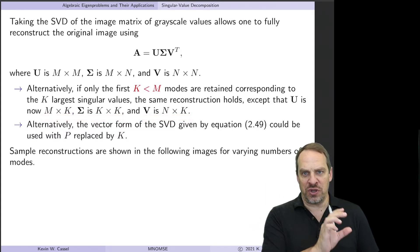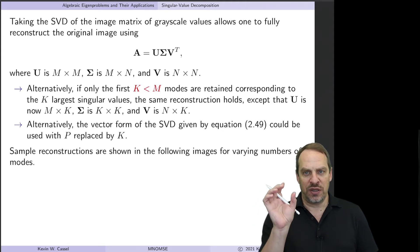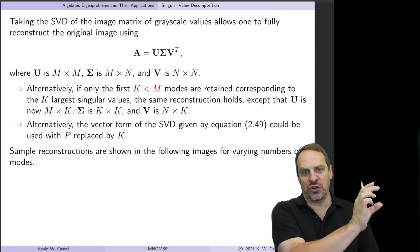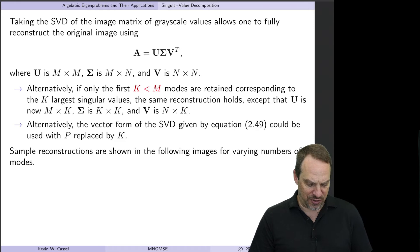In the vector form that we had last time, we could also think of this in the same way as capital K being the total number of terms that we're adding up in order to reconstruct the original A matrix.